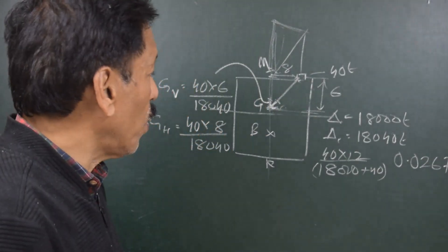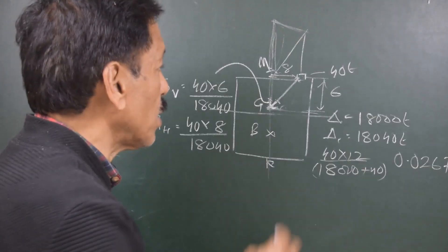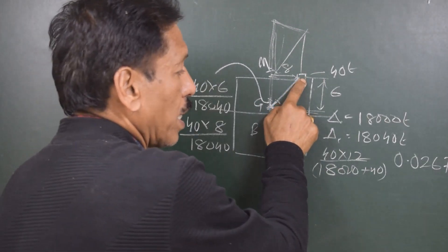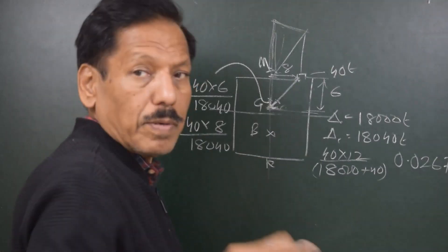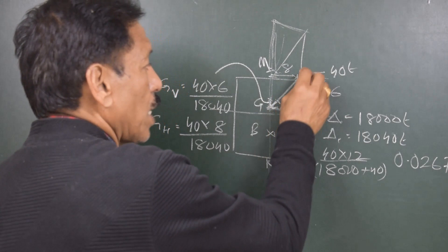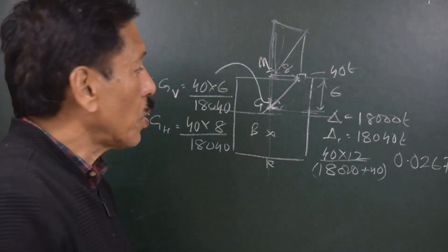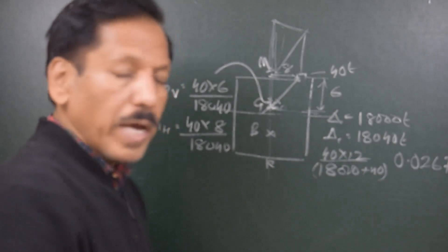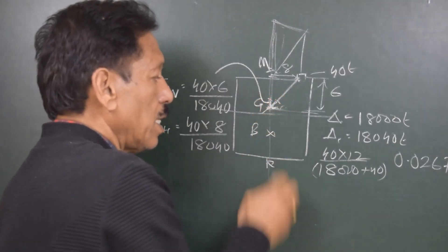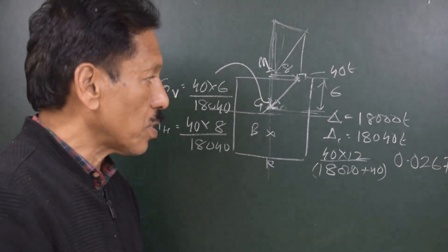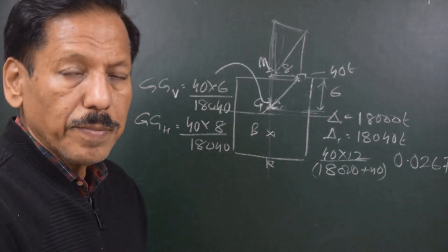Similarly, when we discharge a weight — say a 40-ton weight — the new displacement will be 18,000 minus 40. When we discharge the weight, G shifts in the direction opposite to the point of discharge. We can find out the reduction in KG and the list caused. The transverse movement of G is GGh and the vertical movement is GGv.